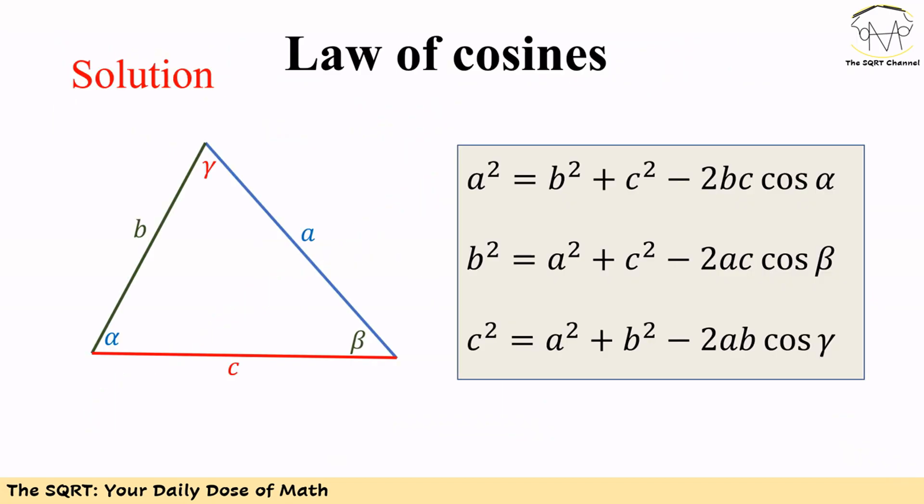To solve this problem we are going to use the law of cosines. For a given triangle with edges a, b, and c, and angles alpha, beta, and gamma, we can write a² as b² plus c² minus 2bc cosine of alpha. Remember, alpha is the angle in front of a.